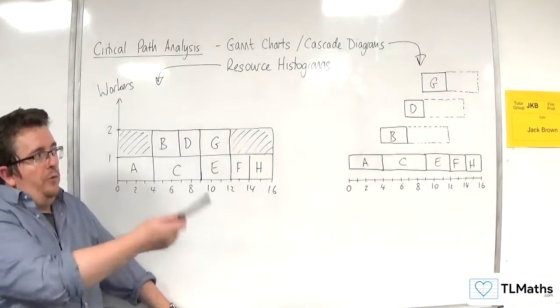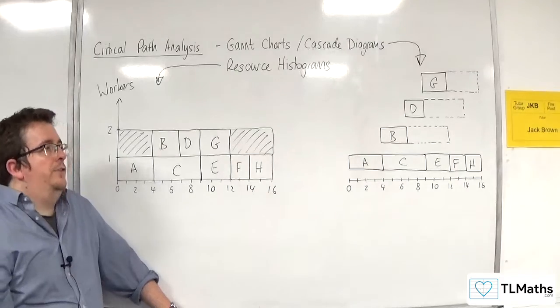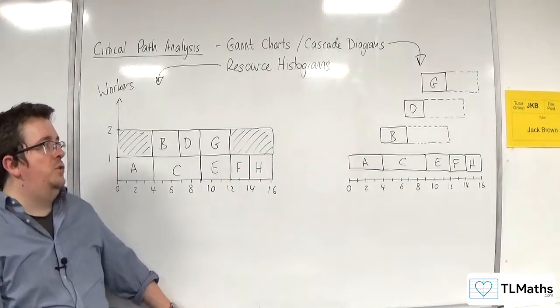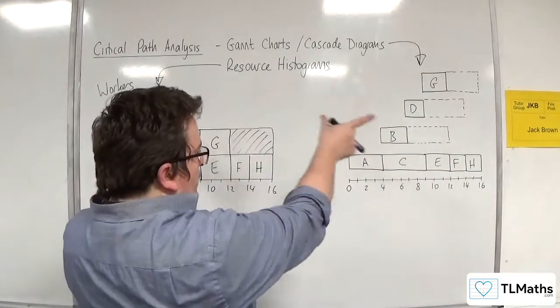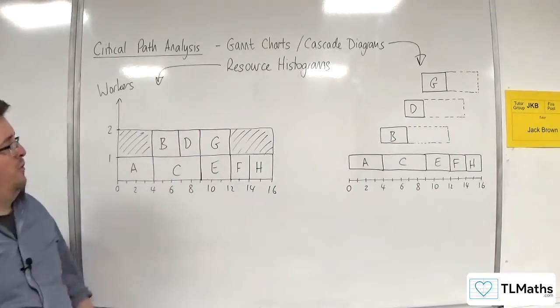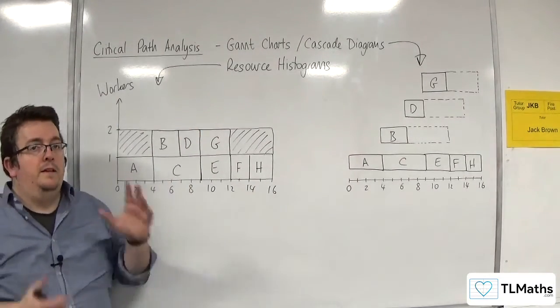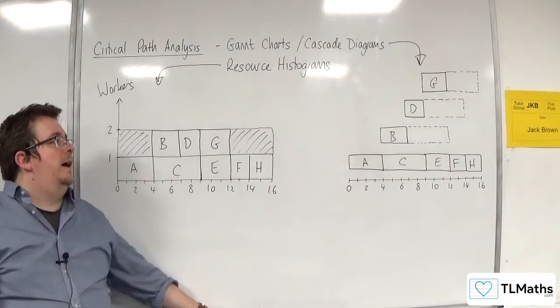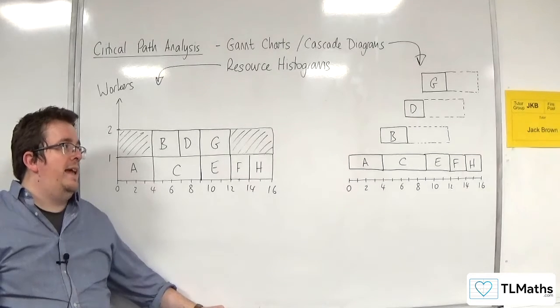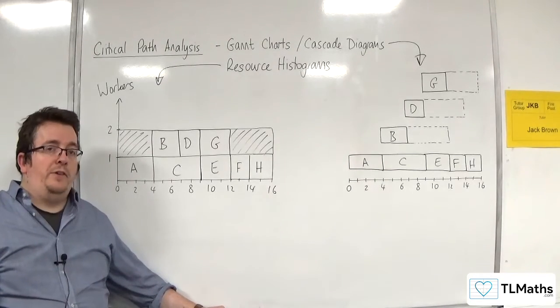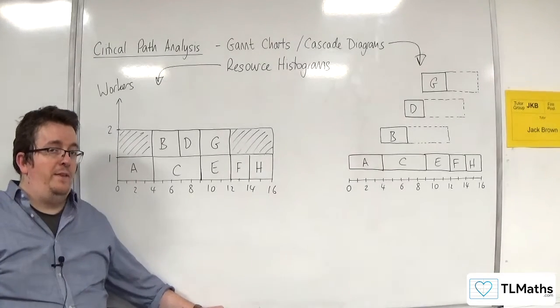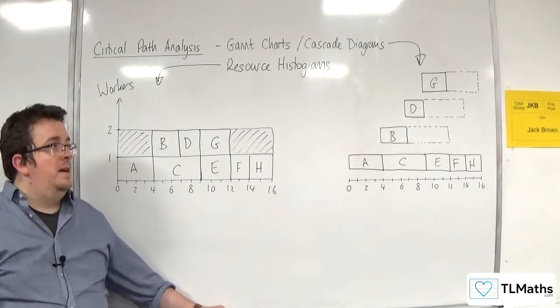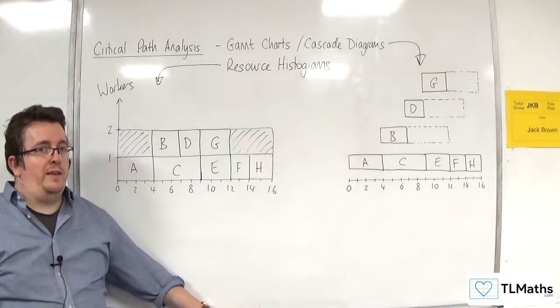Now, sometimes, you know, this was a very easy one to do. Sometimes this can be more fiddly in trying to put the bars in the correct place to minimize the number of workers possible. So it does take some playing around in some scenarios. I would definitely have an eraser ready, just do this in pencil, just in case you make an early mistake. But that's how you can construct a resource histogram.